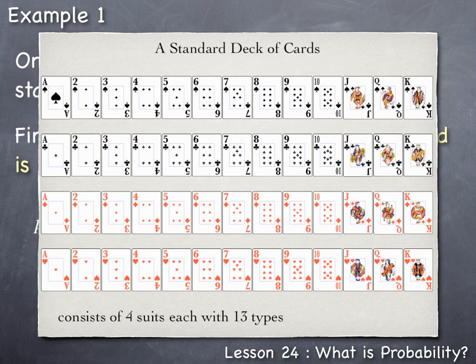With each of the 13 types of cards represented by each of the four different suits, there is a total of 4 times 13, or 52 total cards in a standard deck of cards. With this knowledge of the composition of a standard deck, calculating probabilities such as this one can now be done.